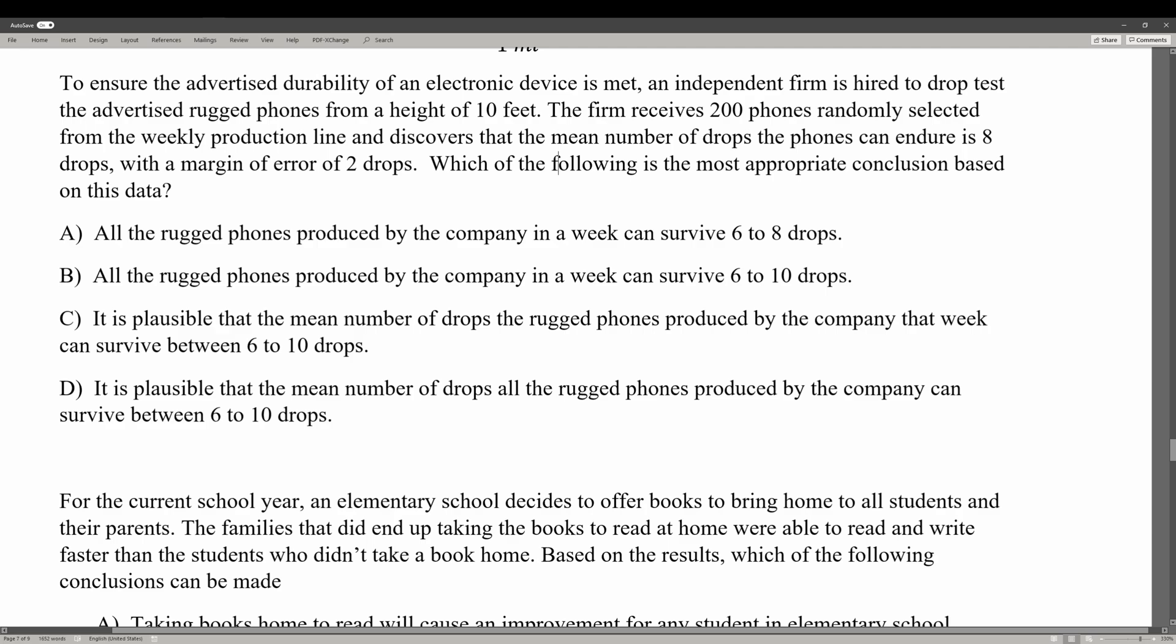To ensure the advertised durability of electronic devices is met, an independent firm is hired to drop test the advertised rugged phones from a height of 10 feet. The firm receives 200 phones randomly selected from the weekly production line and discovers that the mean number of drops the phones can endure is 8 drops, with a margin of error of 2 drops. Choice A says all the rugged phones produced by the company in a week can survive 6 to 8 drops. This is wrong because they didn't survey all the phones. B is also wrong because we didn't test all the phones.